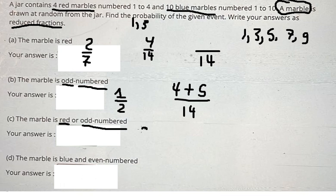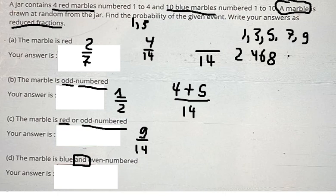The last one: blue and even number. So that should be blue and even number, so we have 2, 4, 6, 8, 10. So there are 5, so we have 5 over 14. And this is the answer, that is the end.